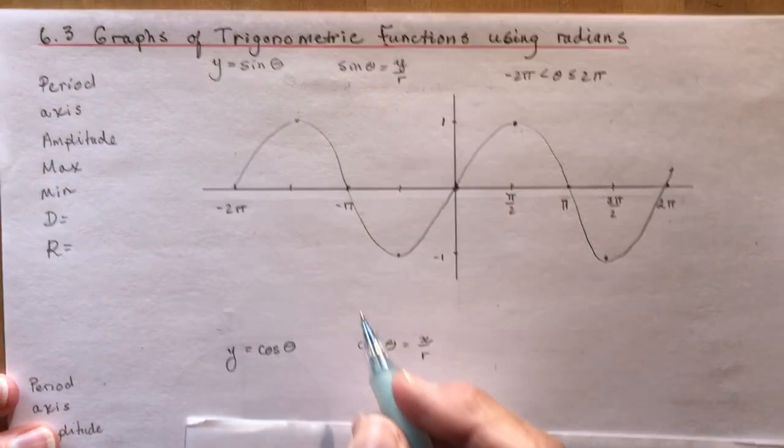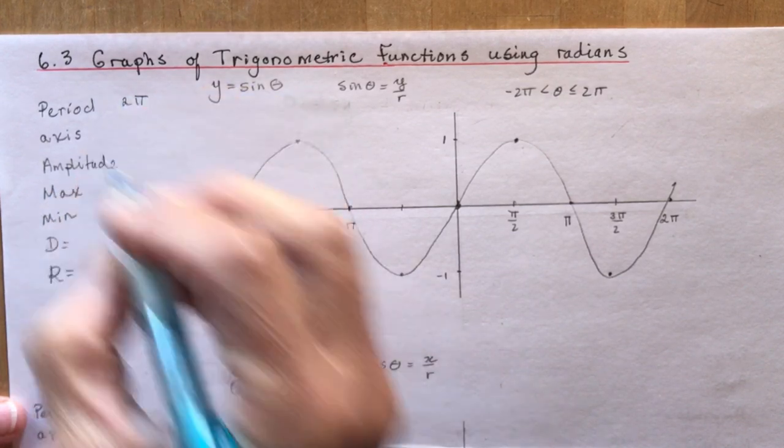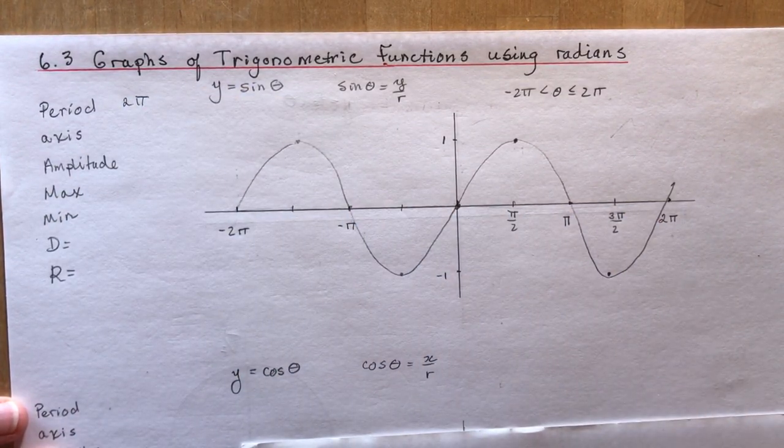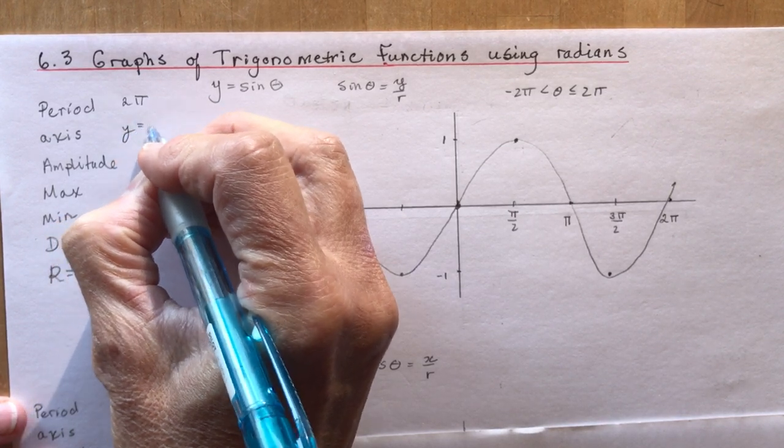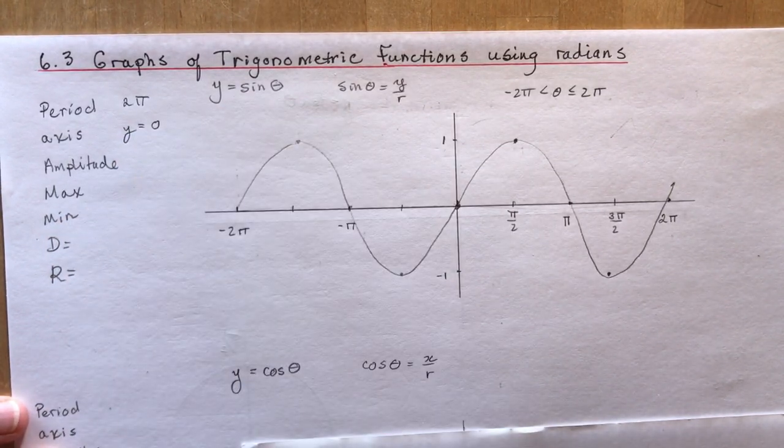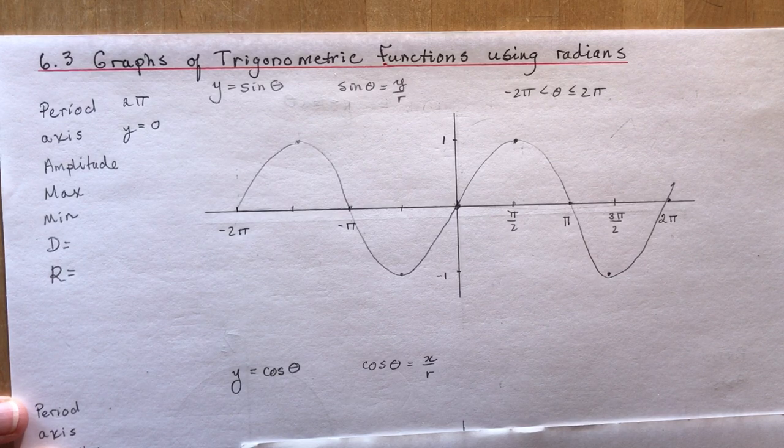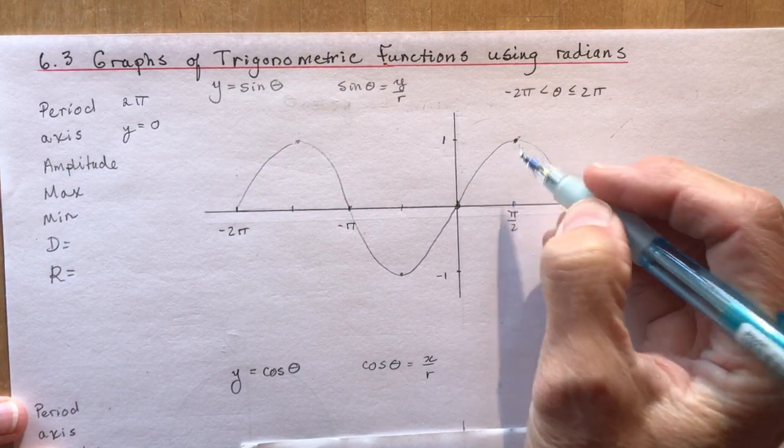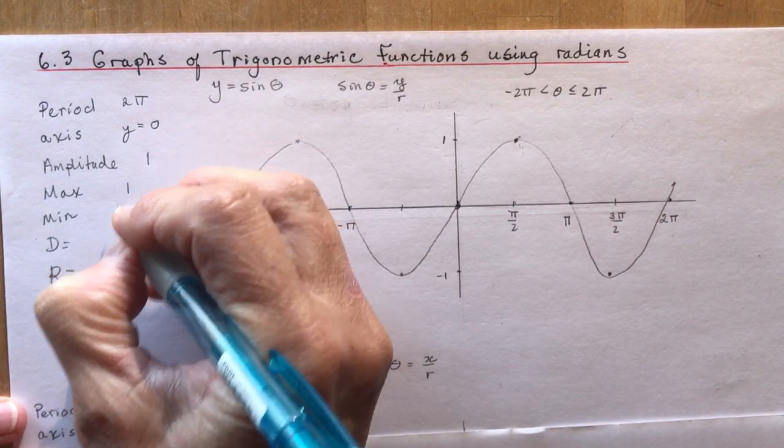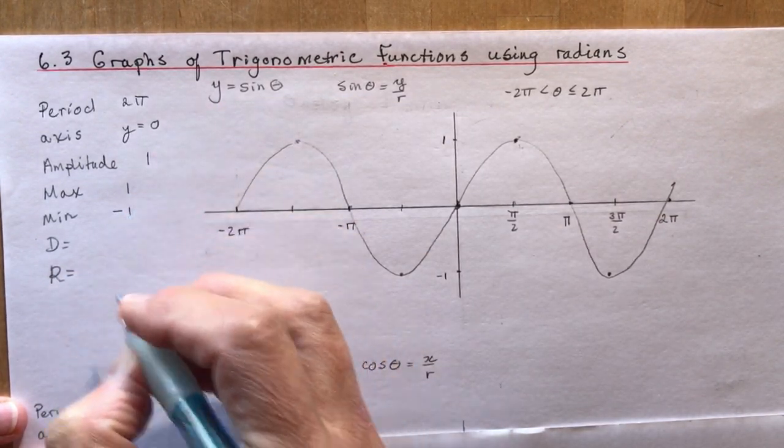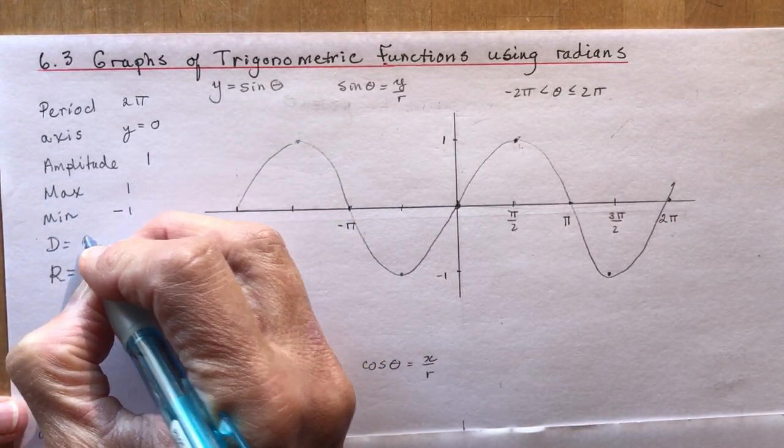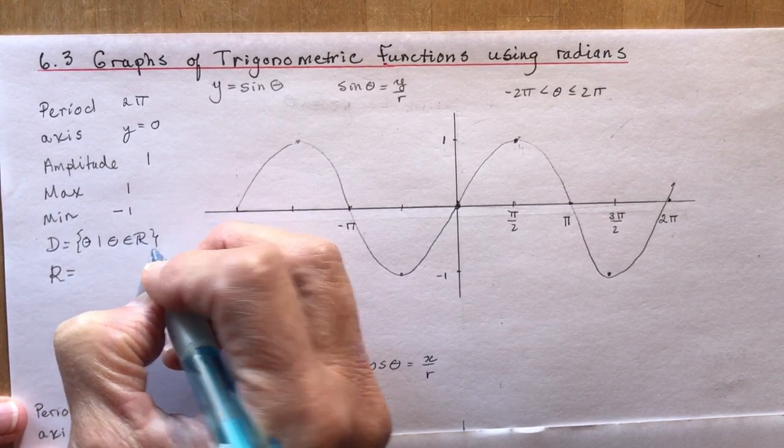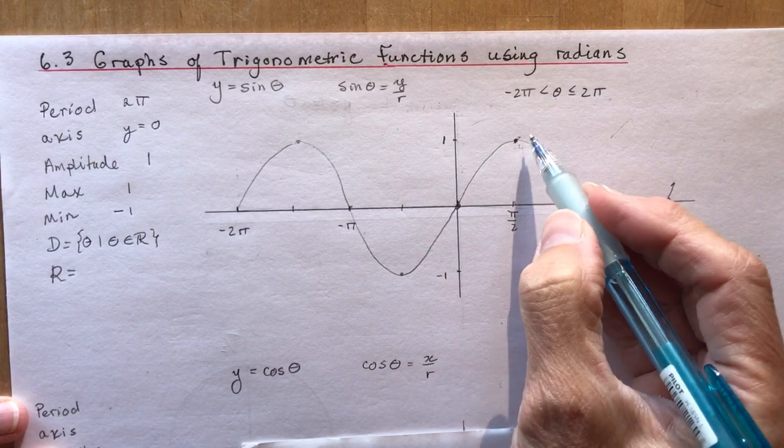Okay so what is the period? The period is 2 pi. The axis, well that's the line that goes right through the middle of it here. So the axis here would just be y equals 0. The line y equals 0. What is the amplitude? The amplitude is how far does it go up from here from the axis up. So it's an amplitude of 1. The maximum is 1. The minimum is minus 1.